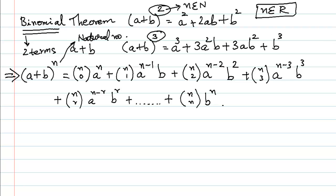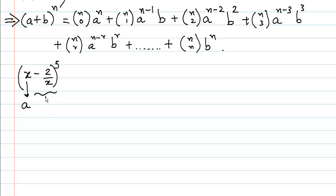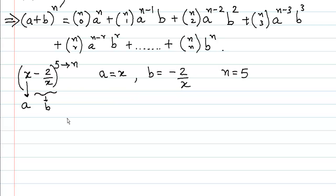Let us understand this with a concrete example. Take x minus 2 upon x, the whole raised to 5. Here the value of A is x, the value of B is the entire term including the negative sign, so B equals minus 2 upon x, and the value of N is 5. Now let us substitute all these values into the formula.